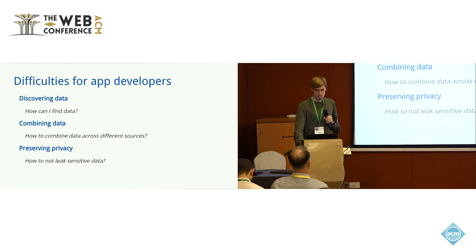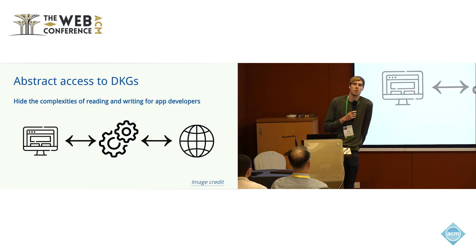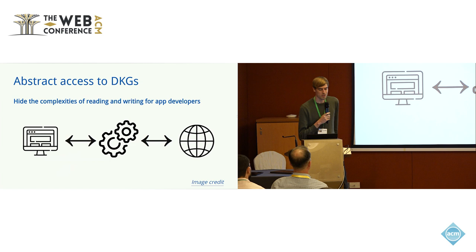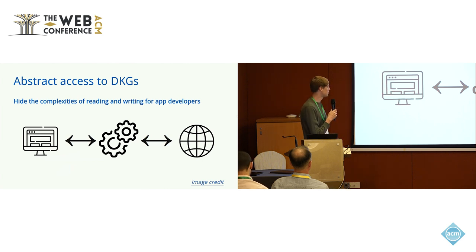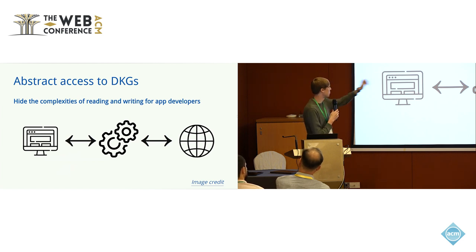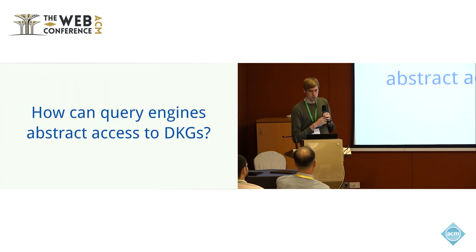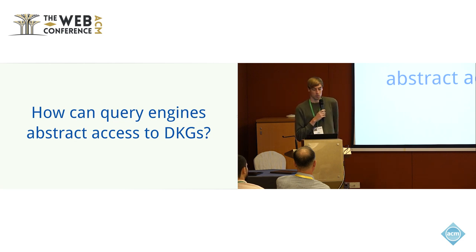In order to hide away complexities for application developers that want to read or write to these decentralized knowledge graphs, there is a need for an abstraction layer that abstracts away these difficulties. We need something that sits in between applications on the one hand and decentralized knowledge graphs on the other hand, so that the application developer has an easier job. The focus of this presentation will be on investigating how query engines can take up this role — essentially, how query engines can abstract access to decentralized knowledge graphs.